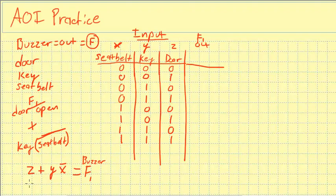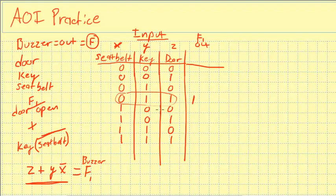Every time Z is a 1, that row might be a 1. Looking at the row where the door is open, the key is in the ignition, and the seat belt is out — that meets the criteria, so the function is 1. Going down, some rows don't meet it. One row has the seat belt plugged in (seat belt = 1), so it wouldn't trigger. Basically, those are all zeros. This is how a truth table works. This is the equation and the row that meets the requirement.